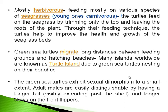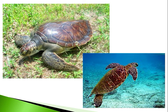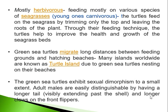There is some degree of sexual dimorphism in Chelonia. Adult males are easily distinguishable by having a longer tail compared to females, and this tail can be seen extending past the shell. Another feature is that males have longer claws on the front flippers compared to the females. The forelimbs as well as the hind limbs are modified as flippers which help them in swimming.